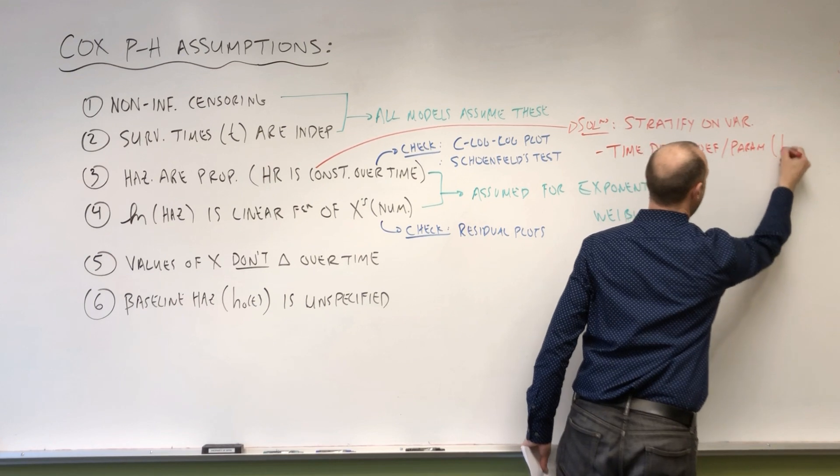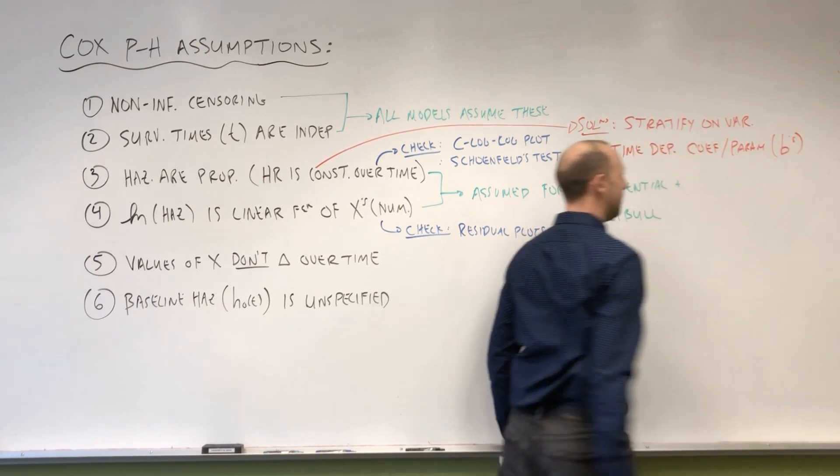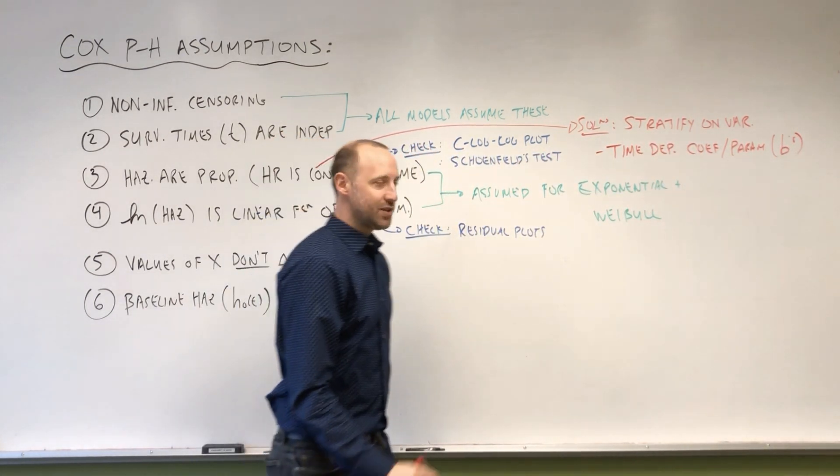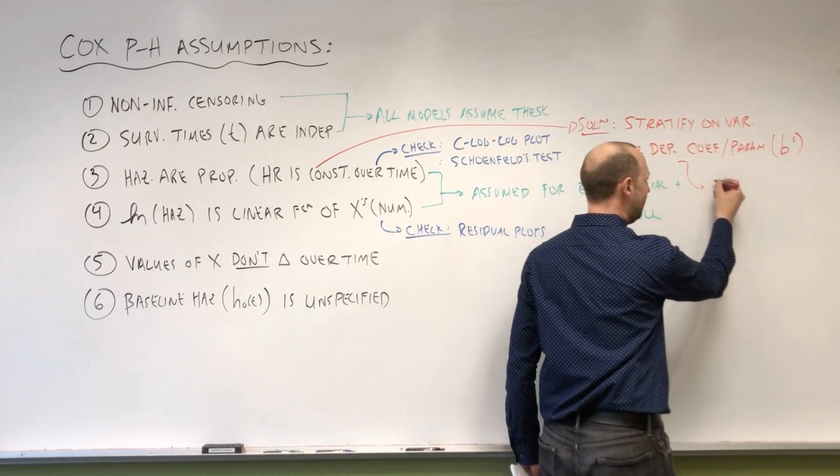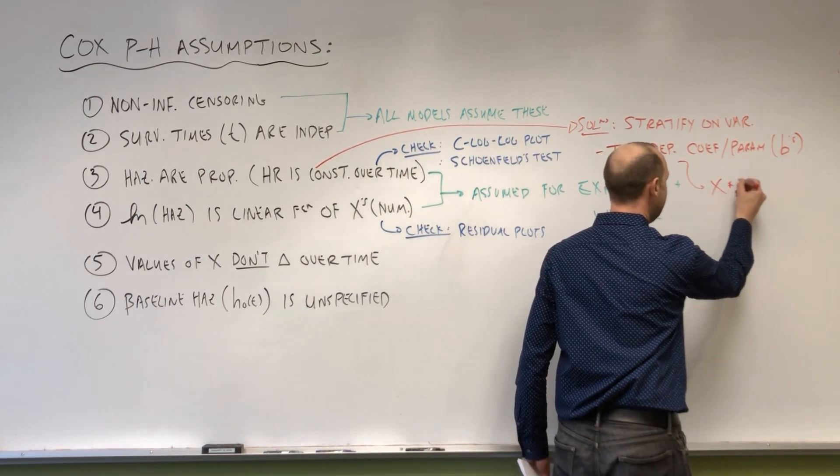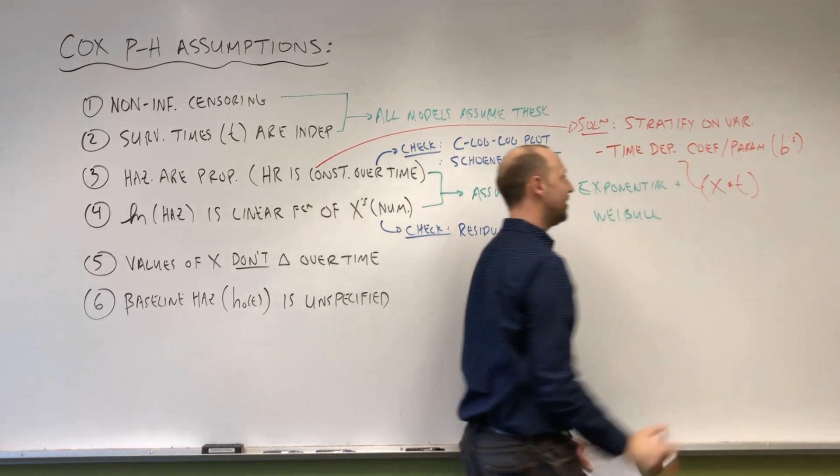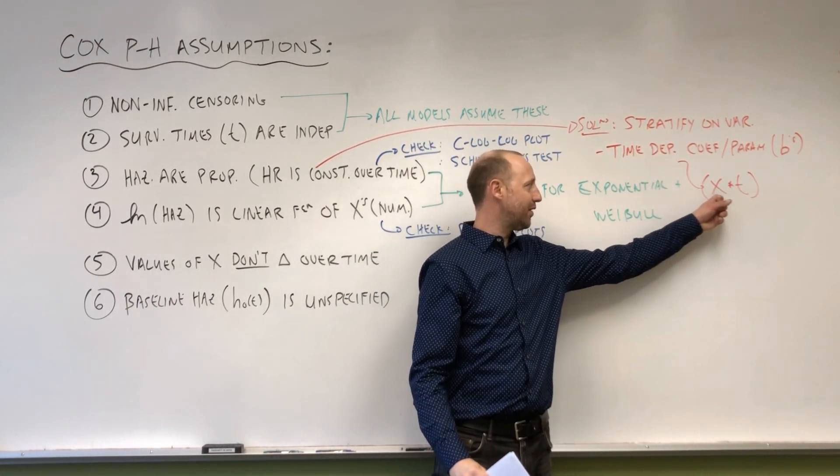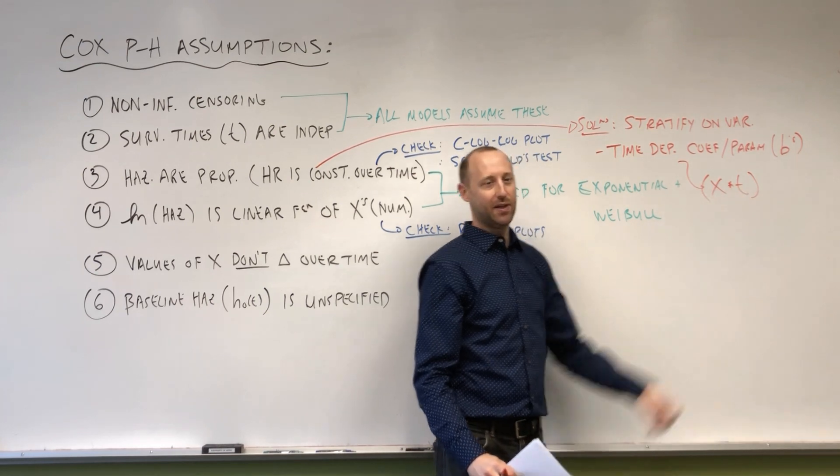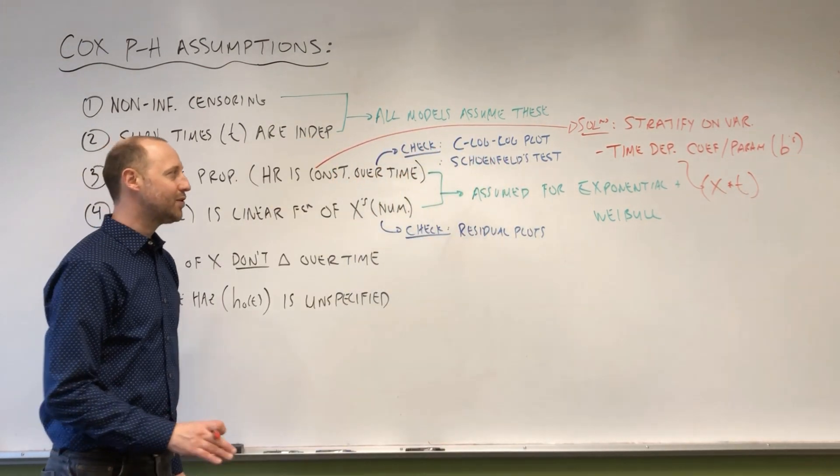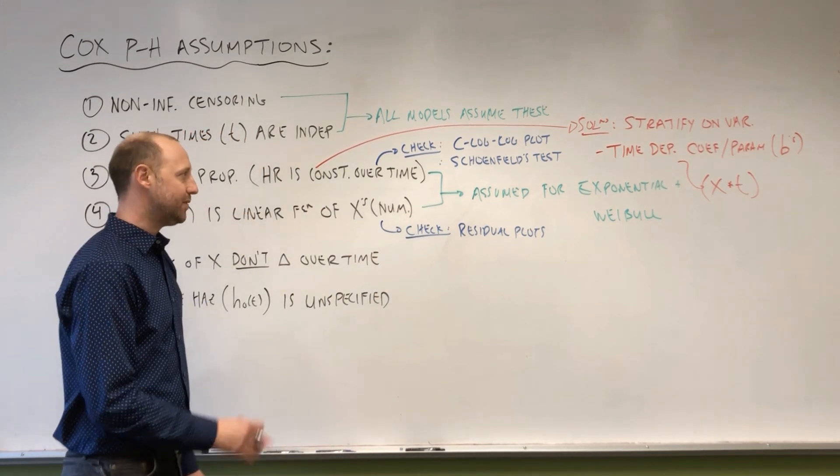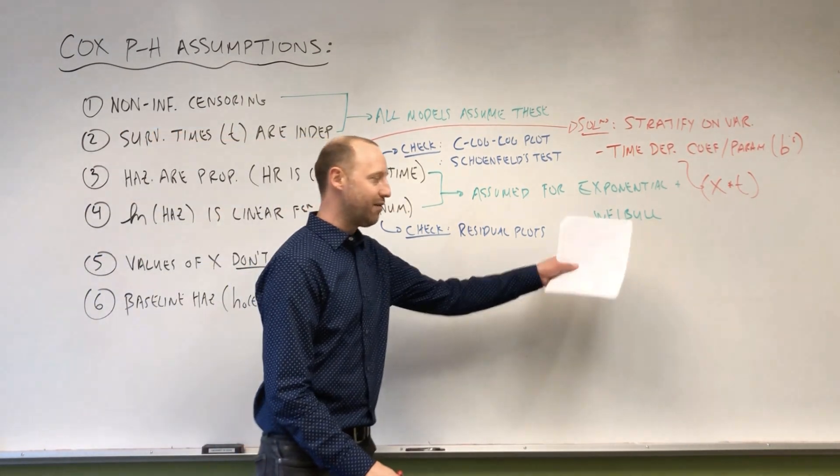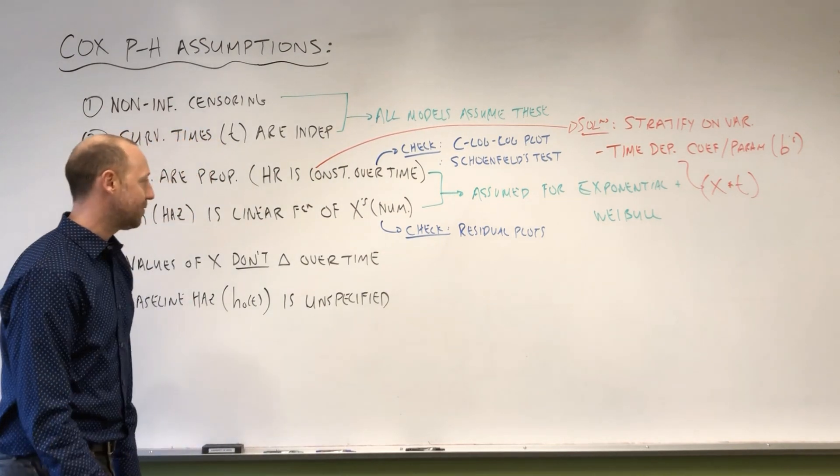And again, those are the b's, the beta's, the model coefficients. So allow the model coefficients to change over time. And as we saw in that last video, this essentially is going to involve fitting an interaction term, allowing the effect of X to change depending on time. So those get called time-dependent coefficients or time-dependent parameter models. And essentially, it's the idea we've already encountered. Included interaction with that.